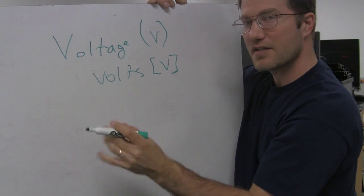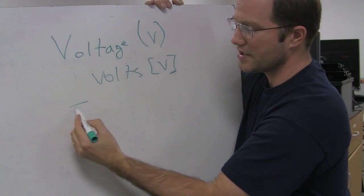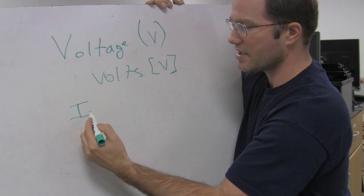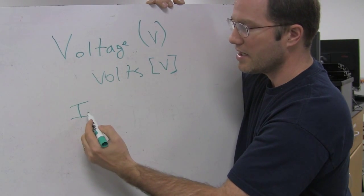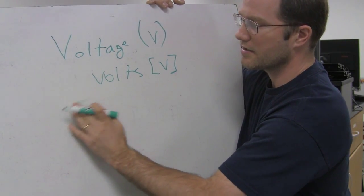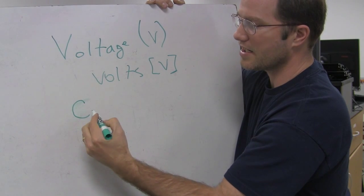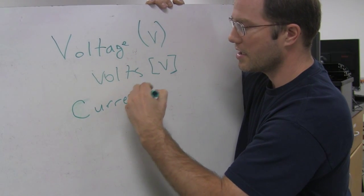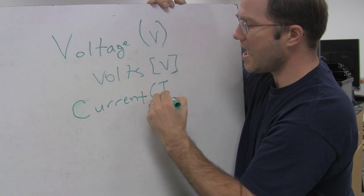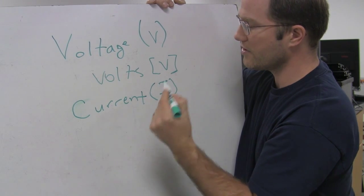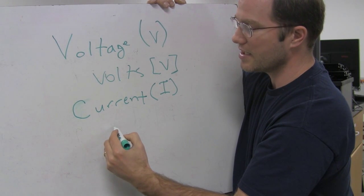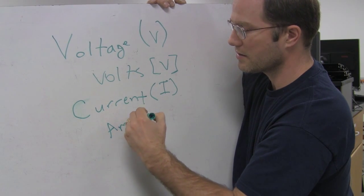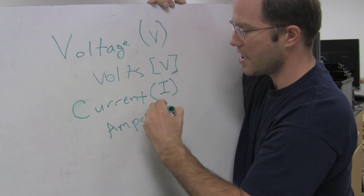We'll also be talking about current. Let's go ahead and label all the quantities we're talking about here. Current — I is the symbol for current and it's measured in amps.